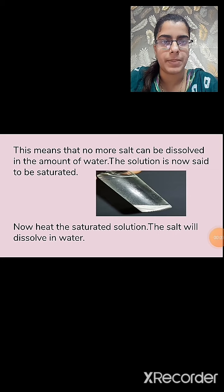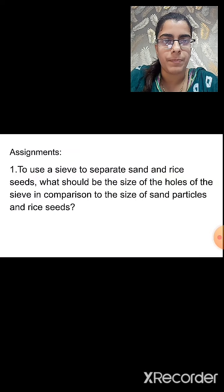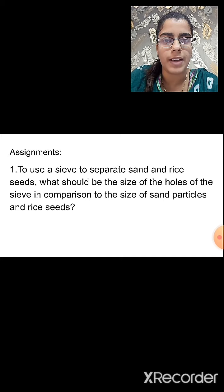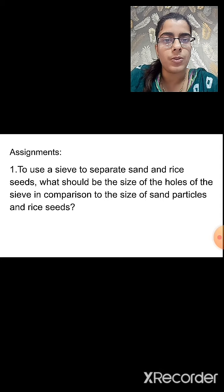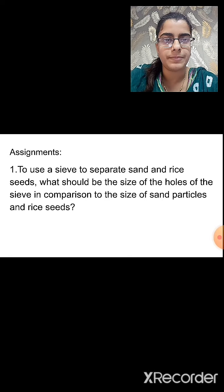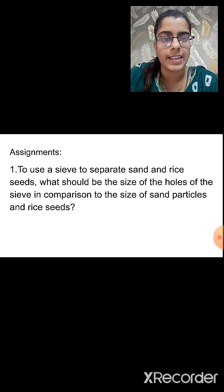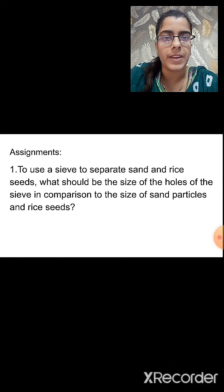We have completed the revision of this chapter. Some assignment questions are given — you can write the answers in your notebook. First question: to use a sieve to separate sand and rice seeds, the size of the sieve holes should be larger than the sand particles but smaller than the rice seeds, so sand passes through easily while the rice seeds are retained on the sieve.